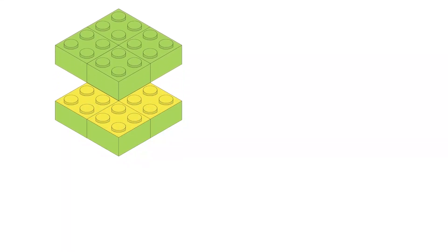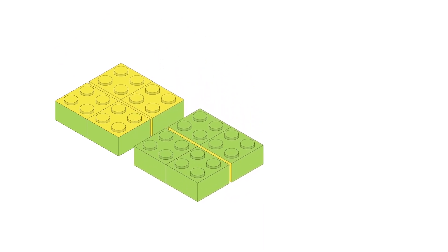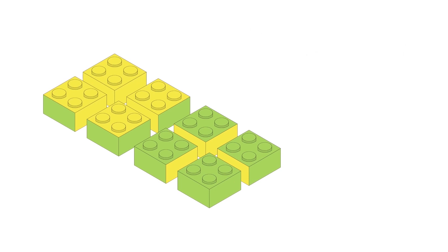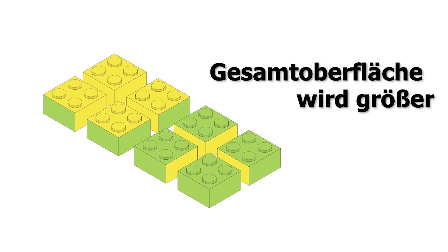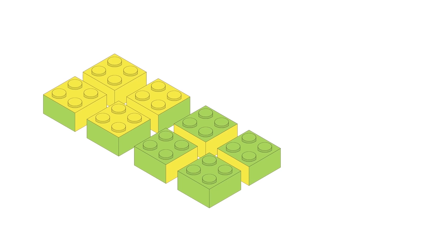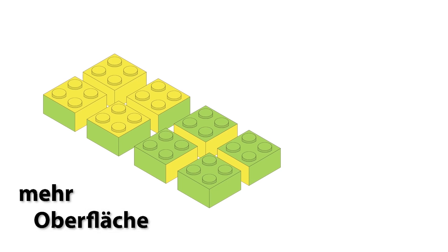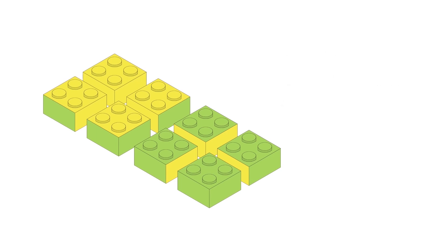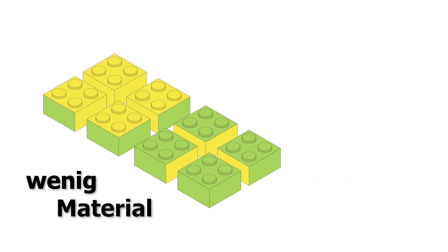Wir zeigen das an einem Legostein. Egal wie häufig man den Legostein teilt, das Gesamtvolumen bleibt gleich. Aber Nanu? Zu den grünen Flächen sind mit jeder Teilung neue gelbe Flächen hinzugekommen. Die Gesamtoberfläche wird größer. Das Oberfläche-zu-Volumen-Verhältnis verändert sich also und verleiht Nanopartikeln damit ganz besondere Eigenschaften. Es hat zum Beispiel Auswirkungen auf ihre Reaktivität. Da mehr Oberfläche für eine Reaktion vorliegt, kann die Reaktion effizienter ablaufen als bei großen Partikeln. Nanopartikel haben deshalb eine hohe Wirksamkeit. Mit wenig Material kann man viel erreichen.